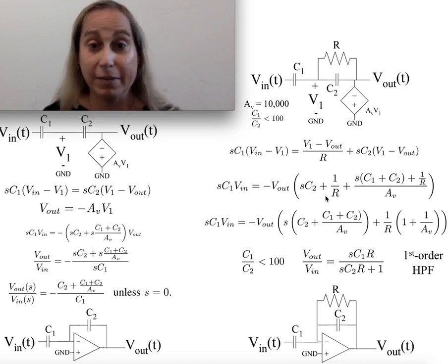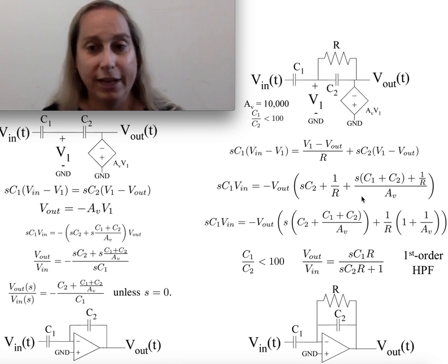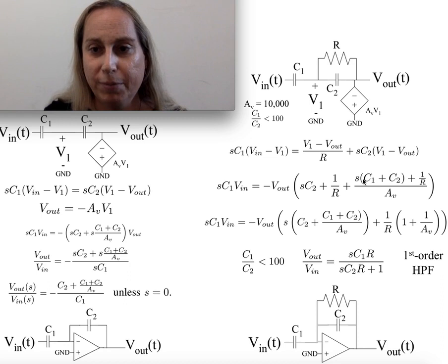These two terms here would have been there had A sub V been basically going to infinity. In other words, had the amplifier had an infinite gain for an op amp, or an ideal case. These are the terms you get for the non-ideal case. I wonder what that's going to do.